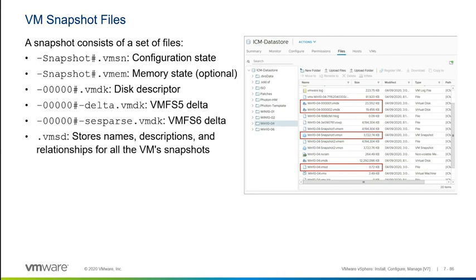A number of files are created when we take a snapshot of a virtual machine. With any virtual machine, when we create it, one of the files we get is a .vmsd file — this is a list of snapshots created for that particular virtual machine. When we build a virtual machine from scratch, we get a .vmsd file, but it's zero bytes in size — there's no data in it. As we begin to take snapshots, the .vmsd file stores the names, descriptions, and relationships between all snapshots and the original base disks.